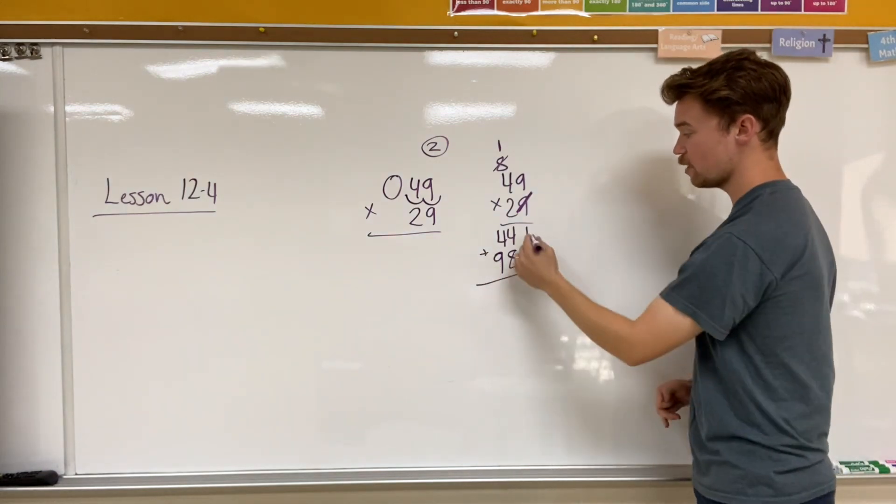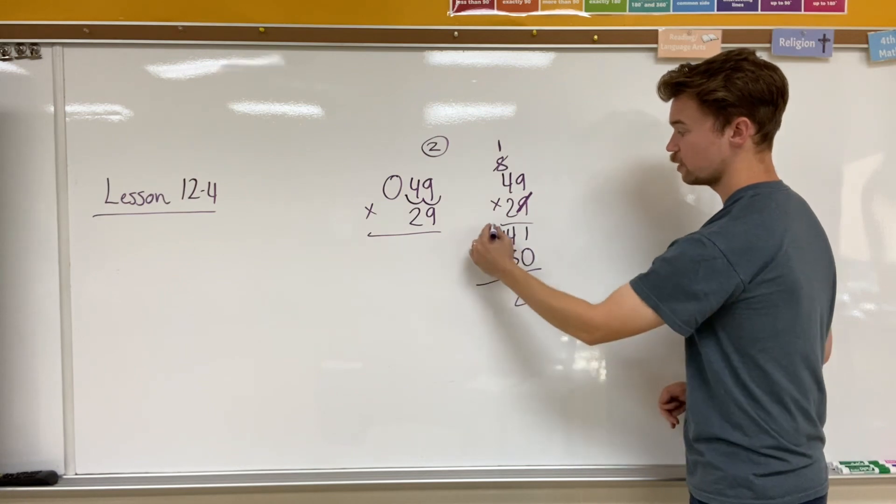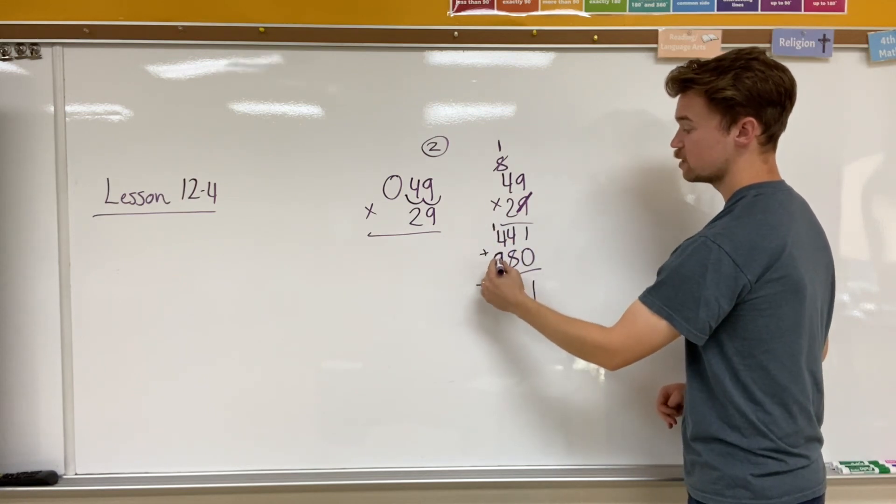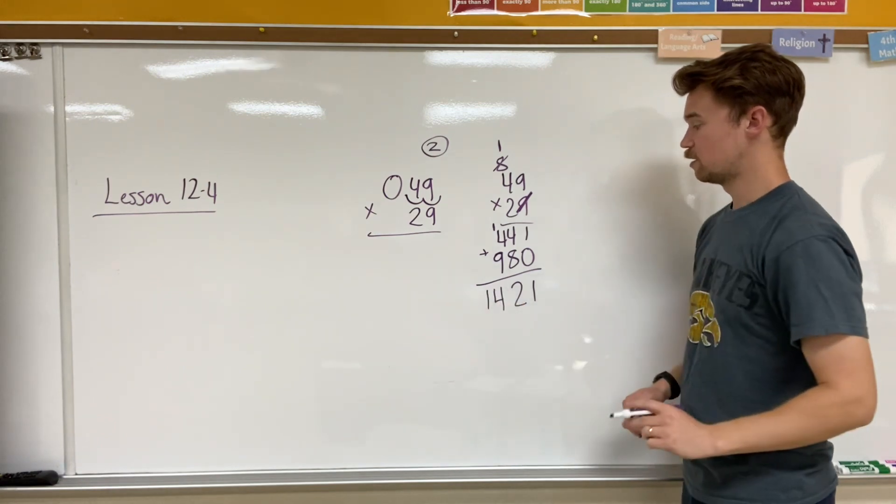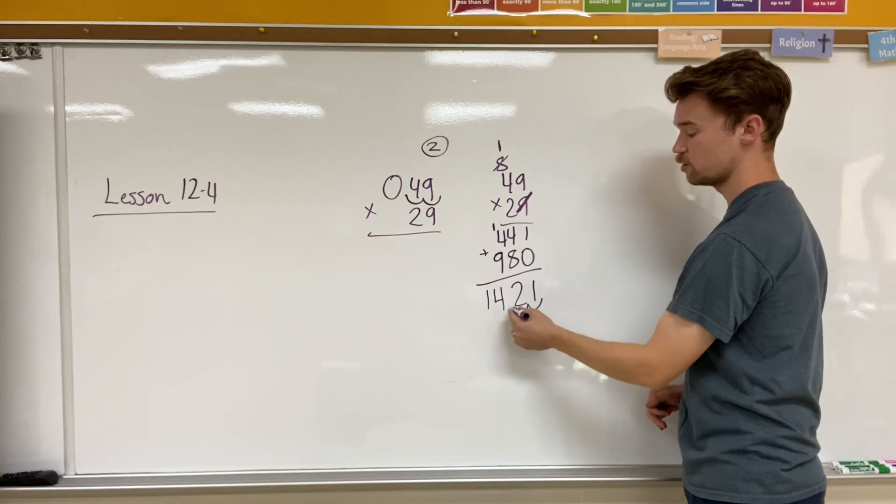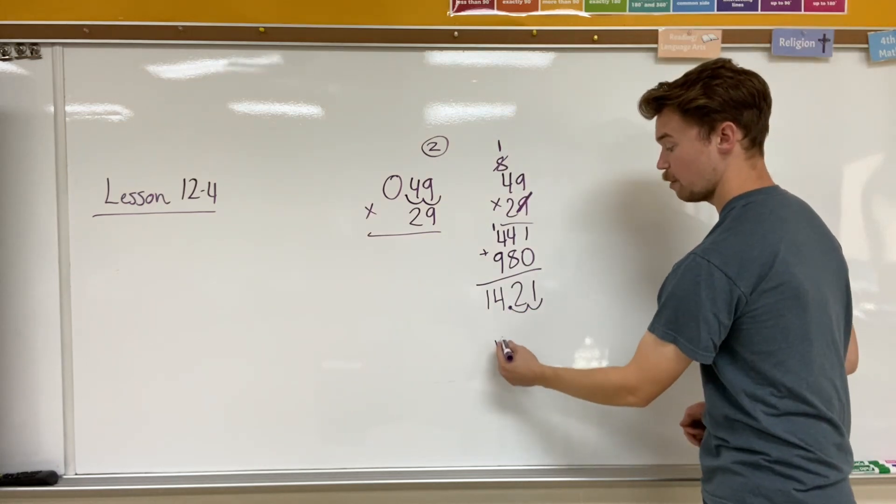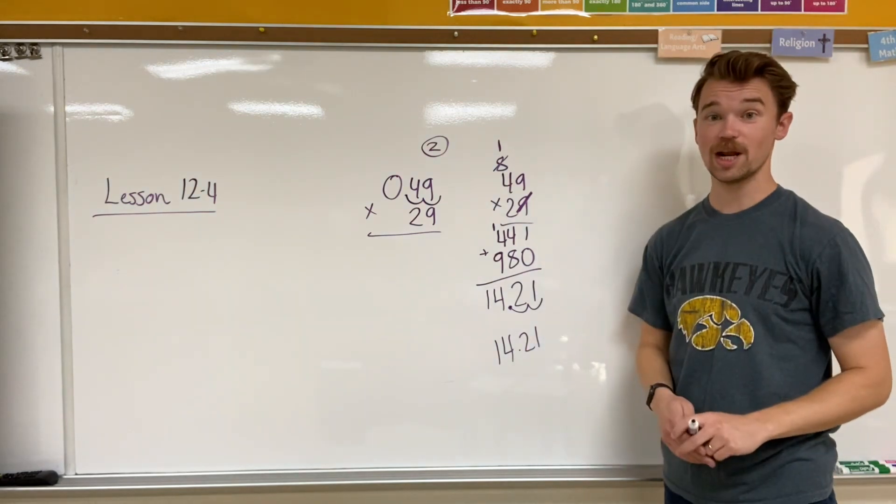And I'm going to be adding those two numbers together. 1 plus 0 is 1. 4 plus 8 is 12. Carry that. And 9 plus 5 is 14. So then I need to move my decimal place from the end back two spaces over. 1, 2. Put it here. And my answer should be 14 and 21 hundredths.